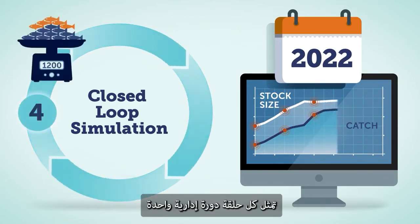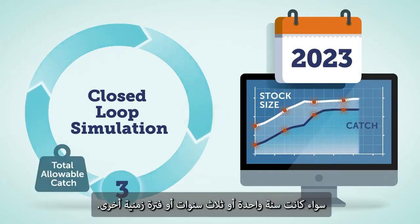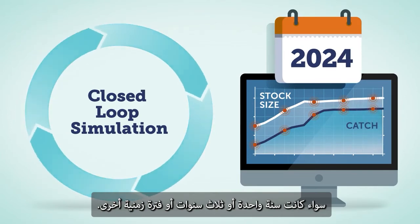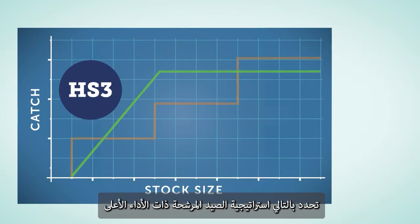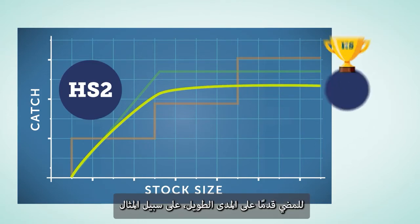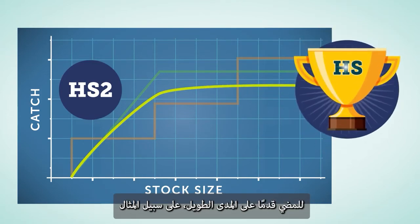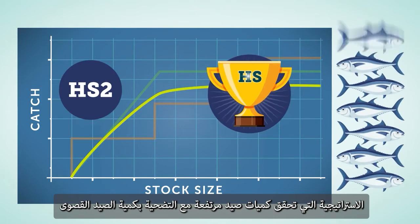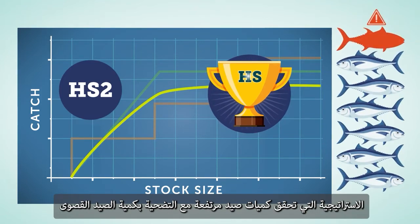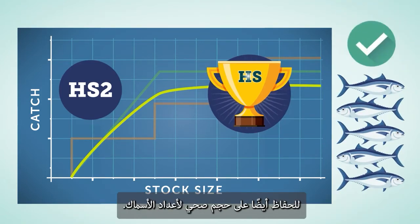Each loop represents one management cycle, be it one year, three years or some other time period. This multi-cycle nature of MSE's closed-loop simulation thus determines the highest-performing candidate harvest strategy going forward over the long term — for example, the strategy that gets high catches while sacrificing maximum catch to also maintain a healthy population size.